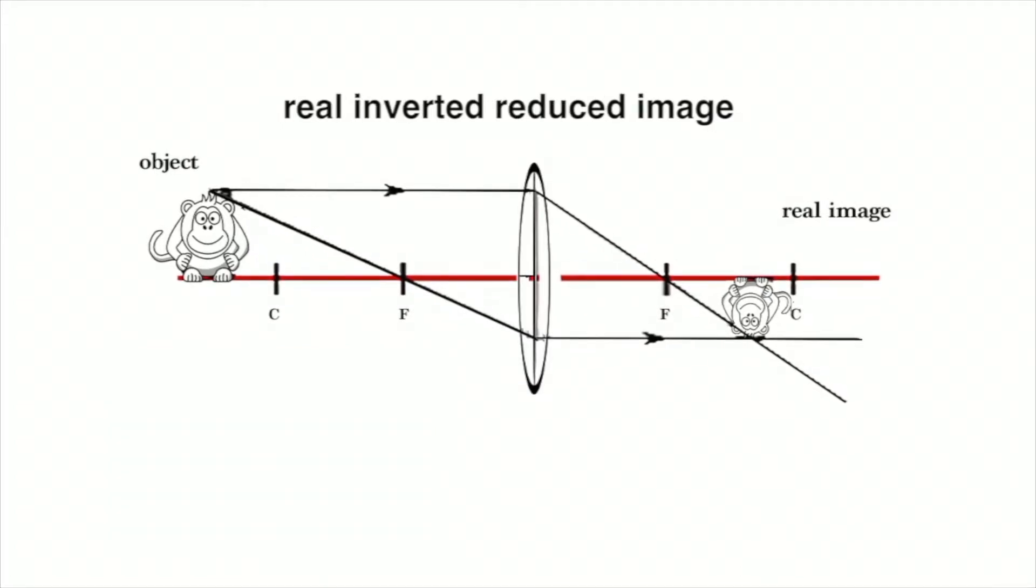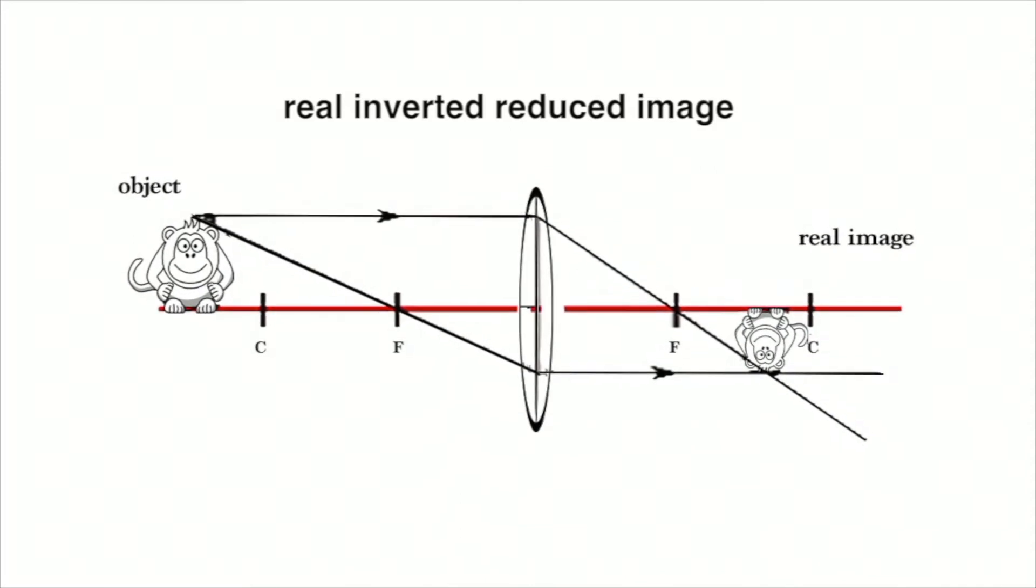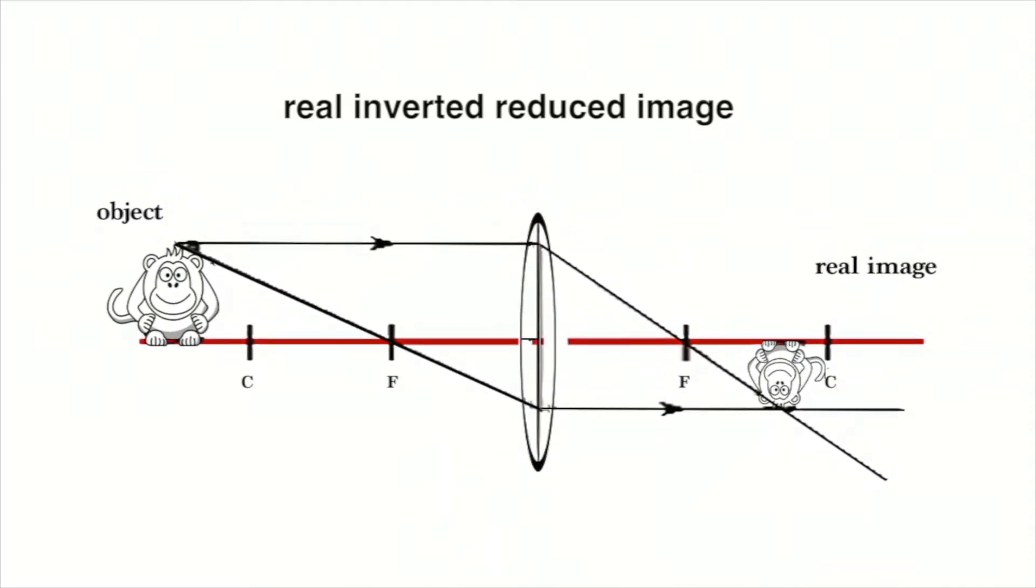A second type of real image is formed when the object is at a distance two times or more the focal length. In this case, the real image is smaller than the object and the image is inverted.